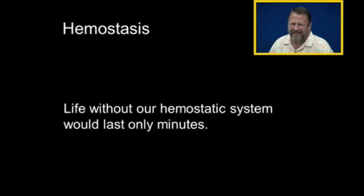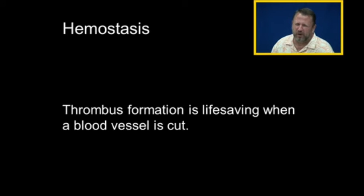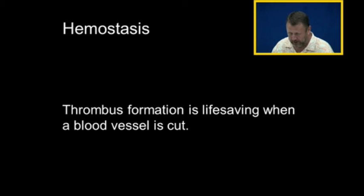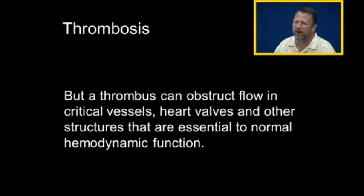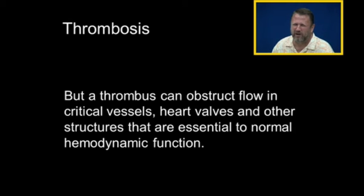If our hemostatic system — our blood clotting system — was completely gone, we would bleed to death everywhere instantly. Blood clot or thrombus formation will save our lives if a blood vessel is cut or ruptured. When we have injury, we want our blood to clot and stop the bleeding. However, what we don't want is a thrombus that obstructs blood flow in critical vessels like our coronary arteries, the blood vessels going to our brain, or blocking heart valves or other structures essential to normal hemodynamic function.